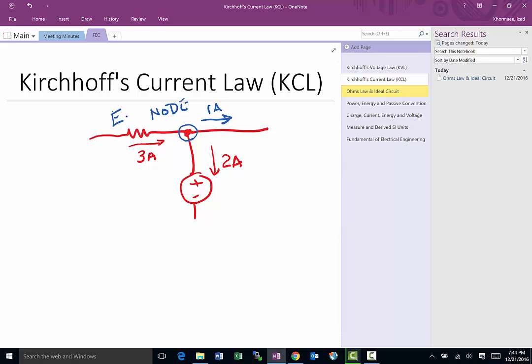To make our life a little easier, what we're gonna do is we're gonna all agree that we always gonna assume current leaving the node is the positive direction for the node. So we're gonna go around the loop and instead of being plus three amp, it's going to be minus three.